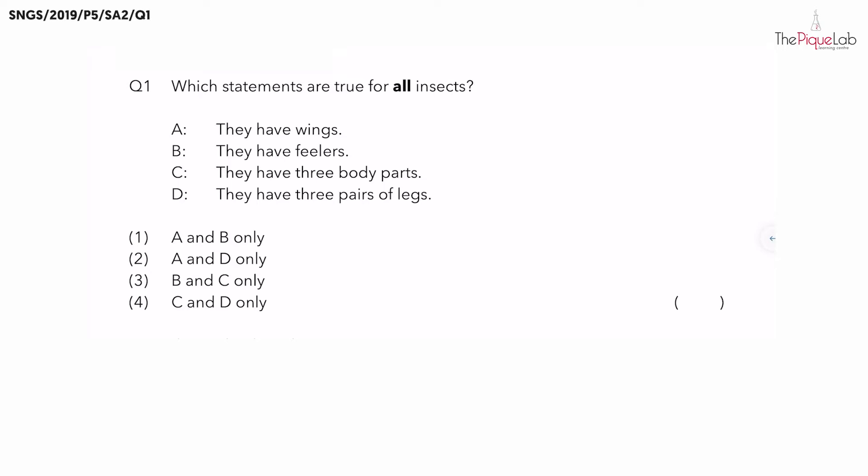Question 1. Which statements are true for all insects? Now let's begin by drawing an insect. How many body parts does an insect have? They have three body parts.